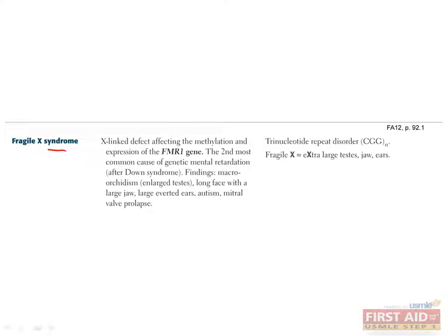Fragile X syndrome occurs in about 1 in 4,000 people and is a trinucleotide repeat disorder of CGG repeats in the FMR1 gene on the X chromosome, which stands for Fragile X Mental Retardation 1. The product of this gene plays a role in brain development. The trinucleotide expansion results in increased methylation, which decreases expression of the gene and affects the chromosome structure, giving it a fragile appearance on microscopy. Patients present with macroorchidism, a long face and large jaw, large everted ears, autism, and a predisposition for mitral valve prolapse.